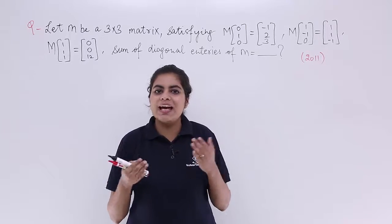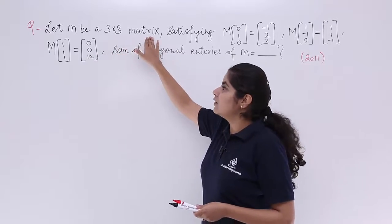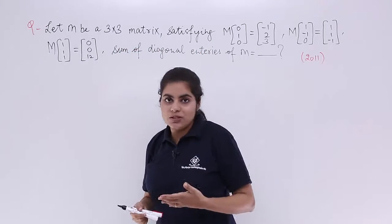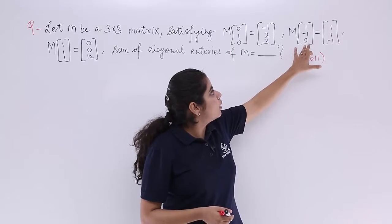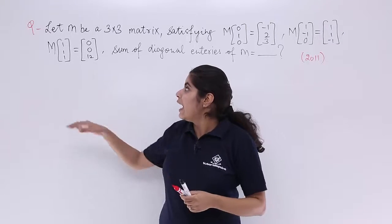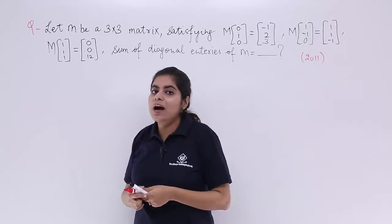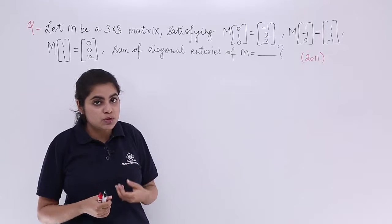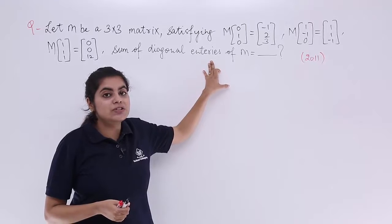Let's see what the question has to say and get started with the solution. The question is: let M be a 3×3 matrix satisfying certain equations — M×[0,1,0] = [-1,2,3], M×[1,-1,0] = [1,1,-1], and M×[1,1,1] = [0,0,12]. This question does not have options; you have to compute the sum of diagonal entries of M.